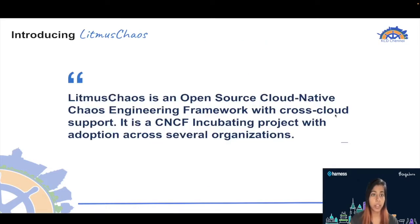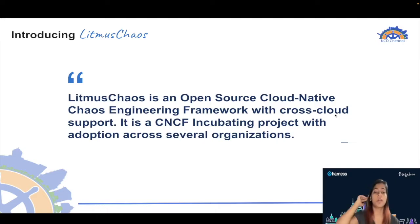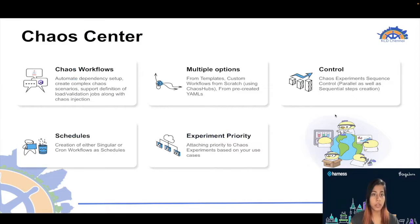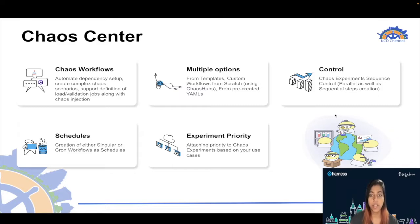With that, I'd like to introduce Litmus Chaos, which is an open source cloud-native chaos engineering framework with cross-cloud support. It is currently a CNCF incubating project with adoption across several organizations. Talking about its features: chaos workflows are a collection of several chaos experiments which can be combined sequentially or in parallel in any manner.